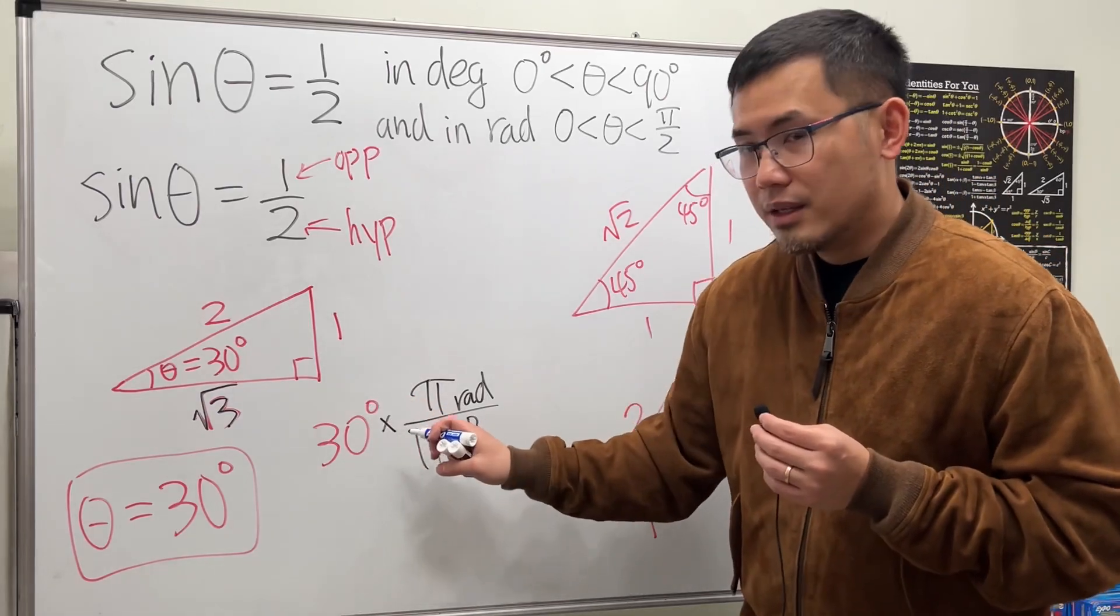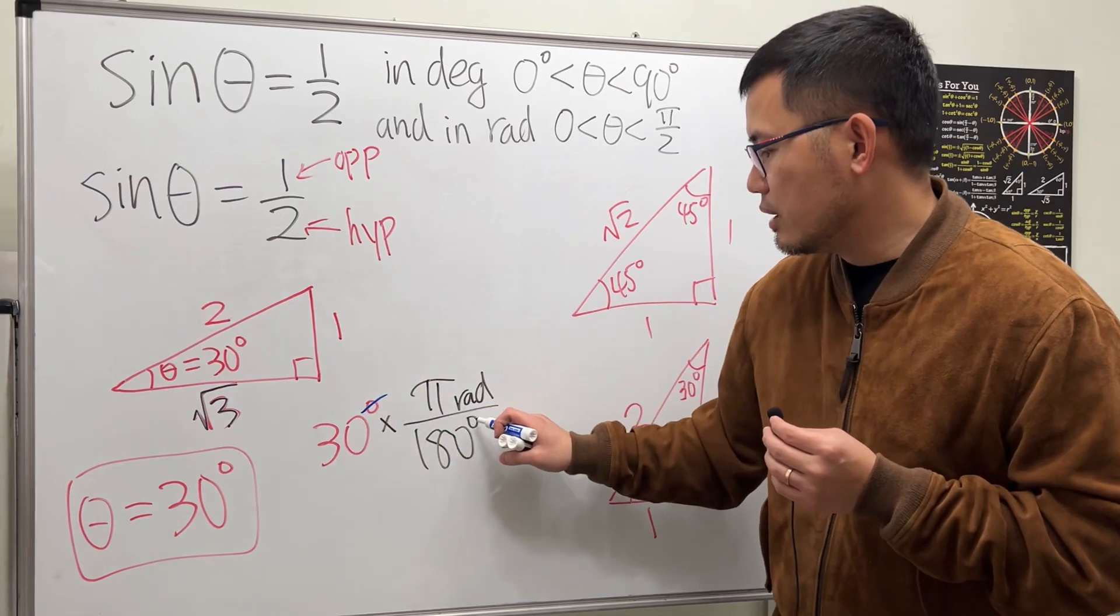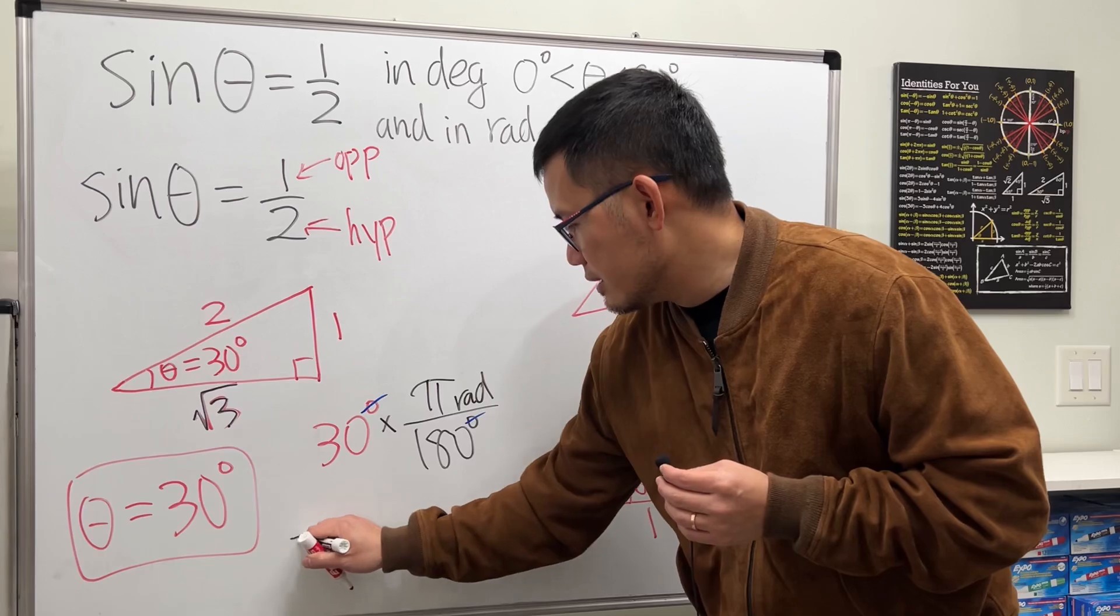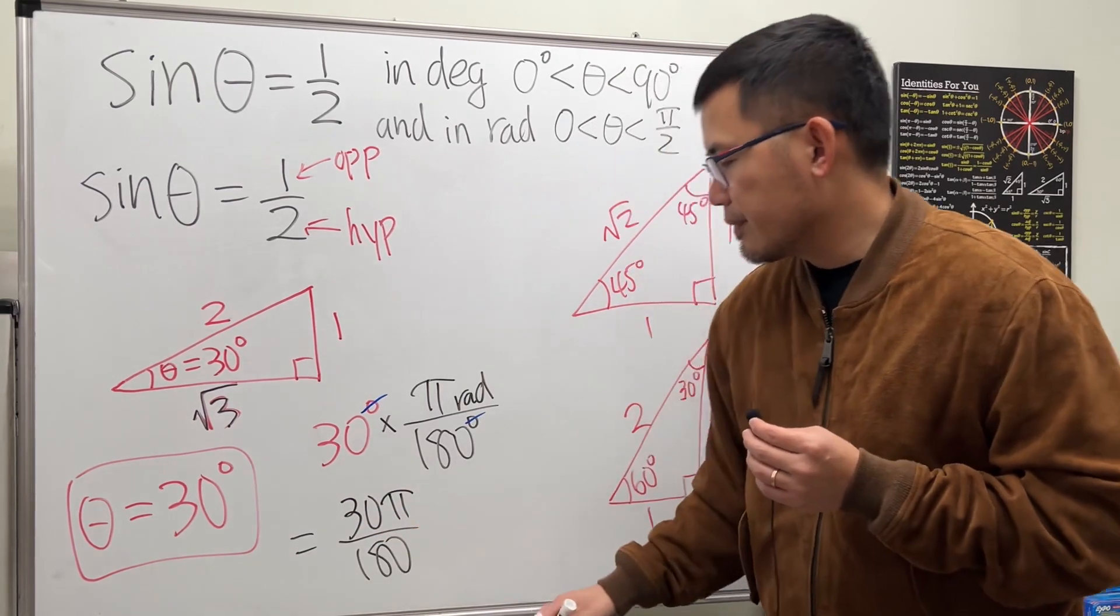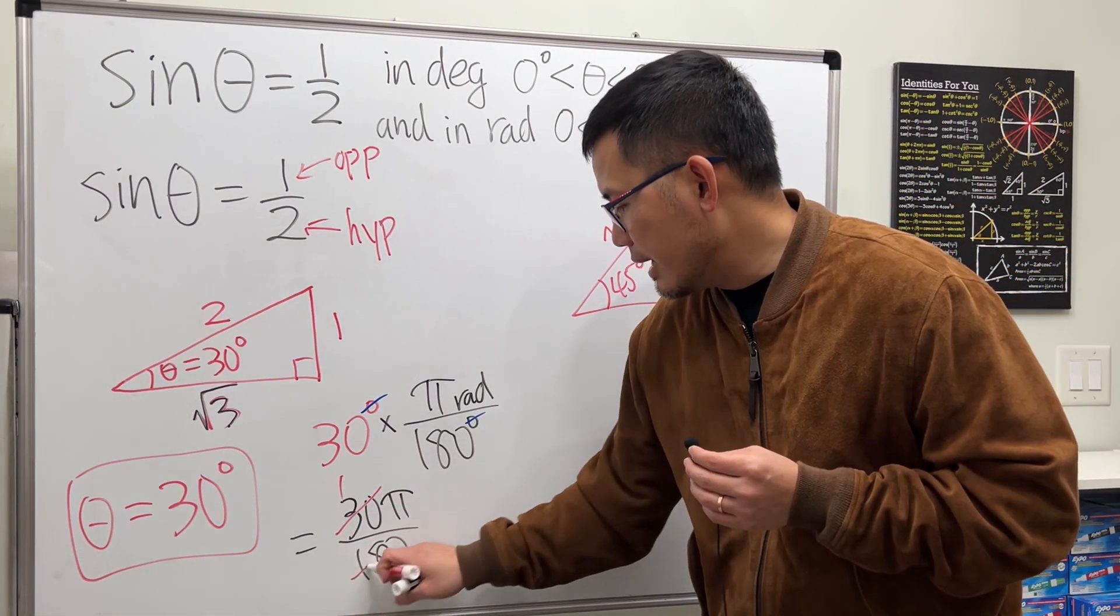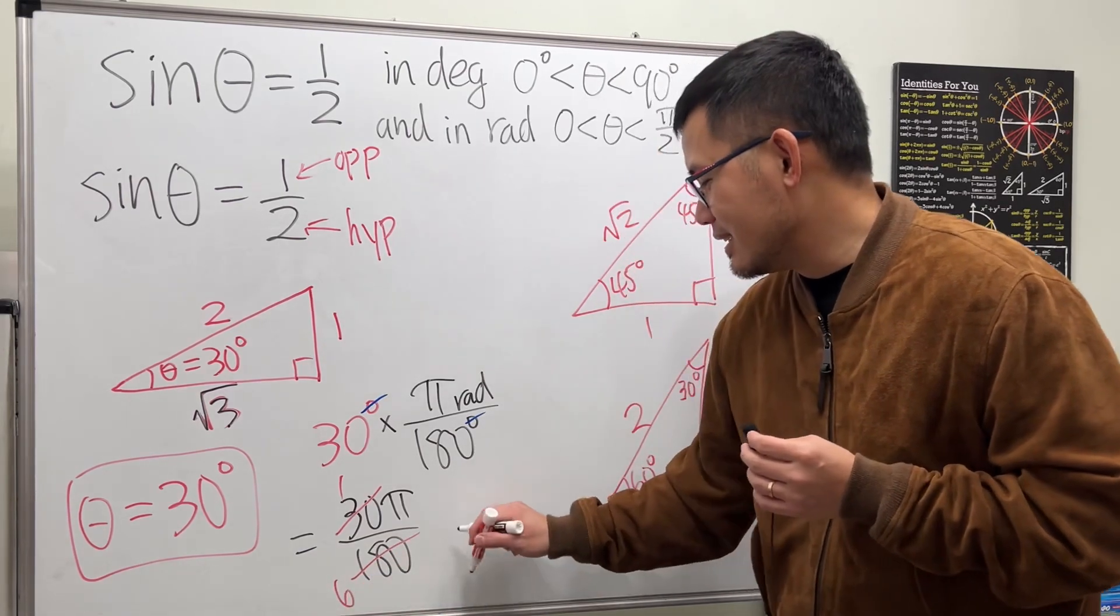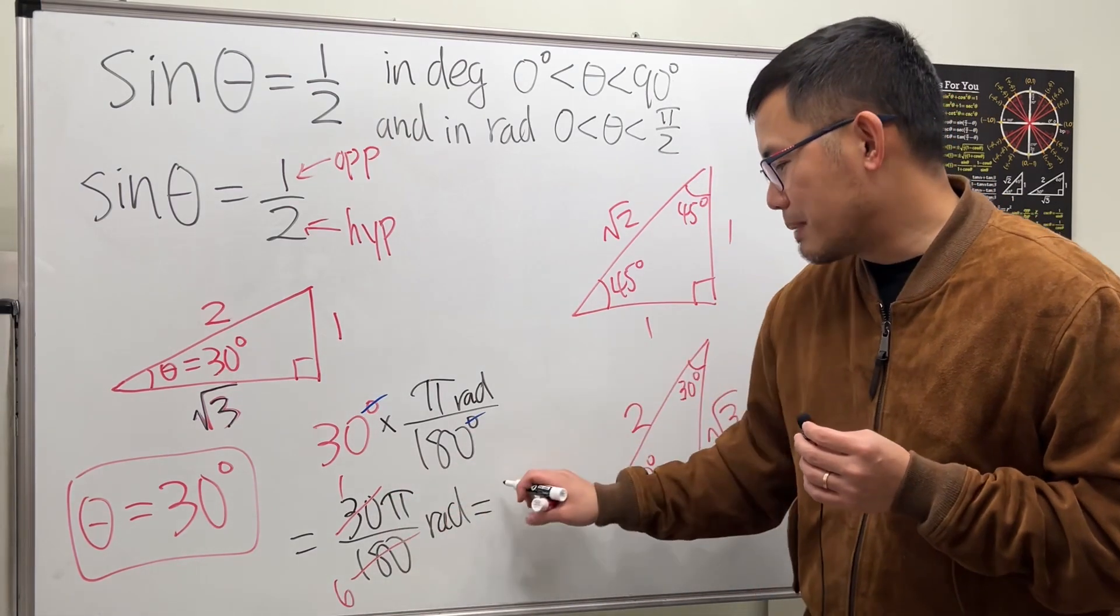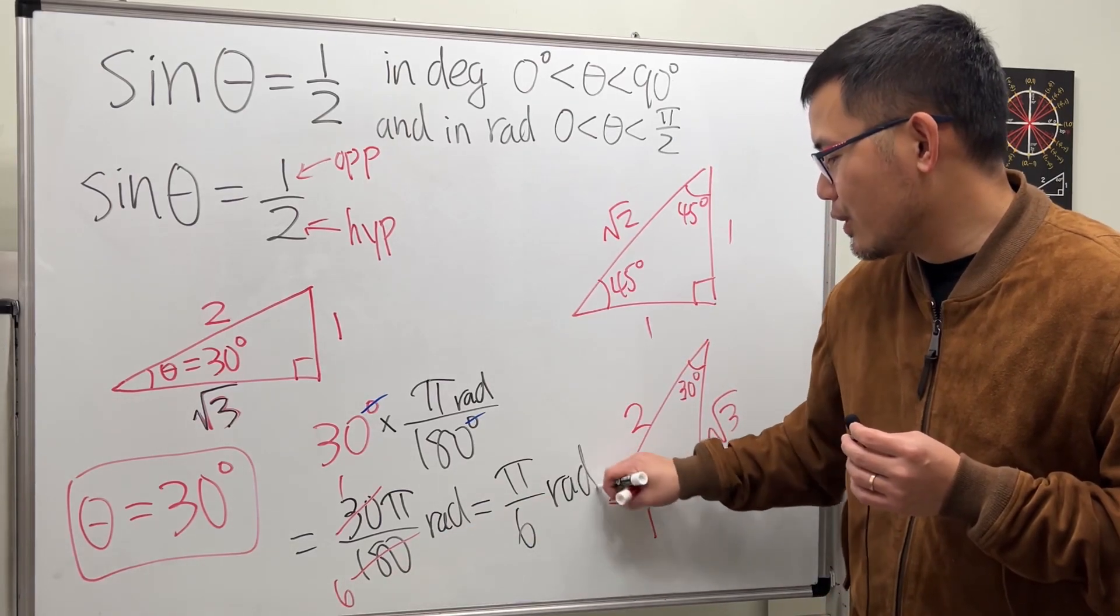Now you see, the reason I put pi over 180 degrees is because degree, degree, cancel. And then here we have 30 pi over 180 radian. And you can just reduce. 30 goes into 30 one time, and 30 goes into 180 six times. So this right here will be pi over 6 radian.